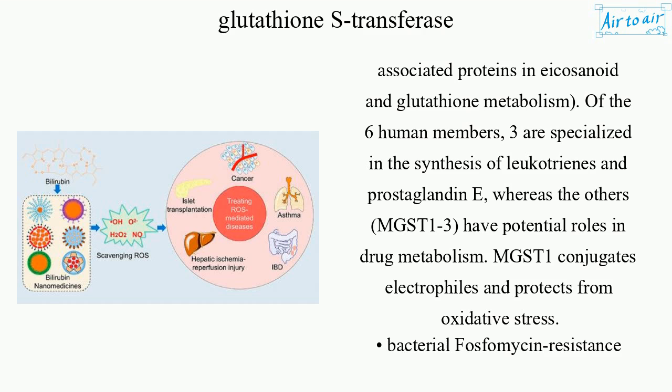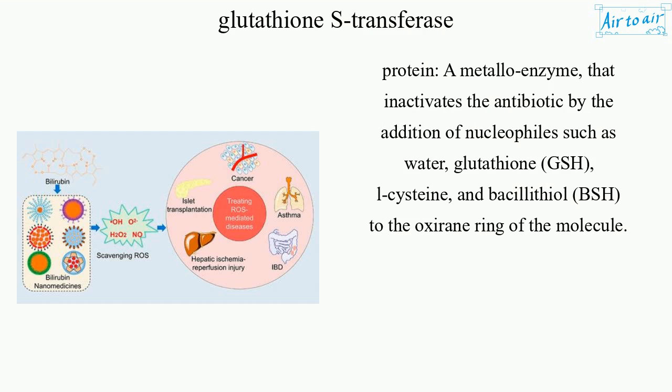Microsomal GST: protects from oxidative stress. Bacterial phosphomycin resistance protein — a metalloenzyme that inactivates the antibiotic by the addition of nucleophiles such as water, glutathione (GSH), L-cysteine, and bacillithiol (BSH) to the oxirane ring of the molecule.